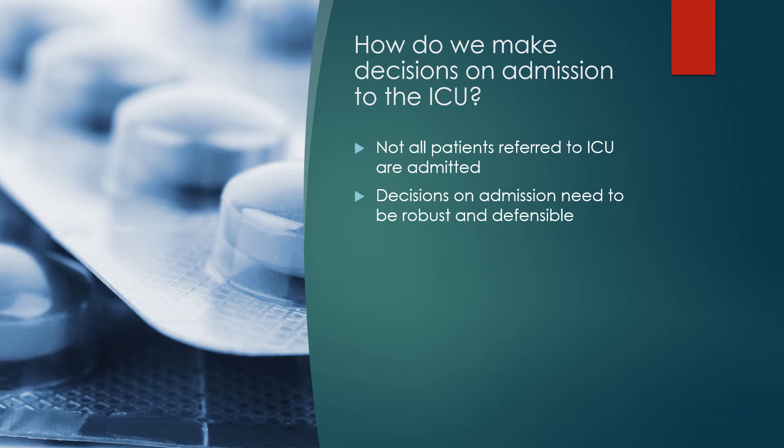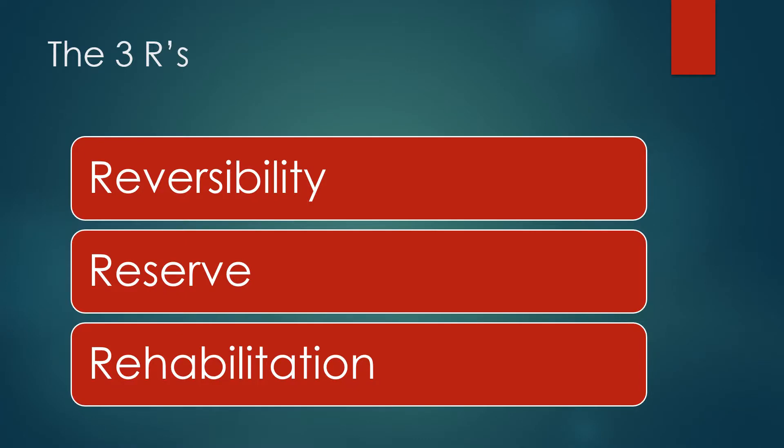How do we go about making decisions for admission to critical care? Quite clearly not all patients referred to us are admitted, but our decisions on admission need to be robust and defensible. The three R's then are reversibility, reserve, and rehabilitation.